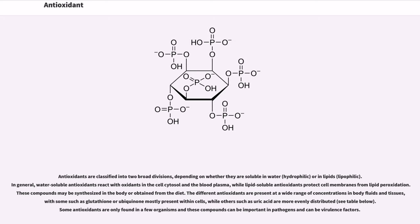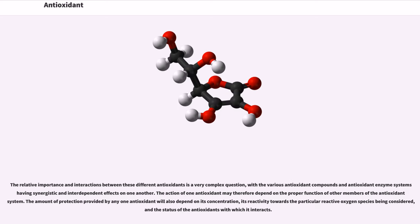The different antioxidants are present at a wide range of concentrations in body fluids and tissues, with some such as glutathione or ubiquinone mostly present within cells, while others such as uric acid are more evenly distributed. Some antioxidants are only found in a few organisms and these compounds can be important in pathogens and can be virulence factors. The relative importance and interactions between these different antioxidants is a very complex question, with the various antioxidant compounds and antioxidant enzyme systems having synergistic and interdependent effects on one another.